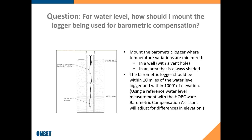Make sure there's a vent hole in the well cap so it's open to atmospheric pressure. You can use that one barometric pressure logger for other water level loggers in the area — as long as it's within 10 miles and 1,000 feet of elevation, that should be good enough for barometric compensation. By using our barometric compensation system and a reference water level measurement, it does the math to compensate for the difference in elevation, so the barometric logger doesn't have to be right next to your water level logger.